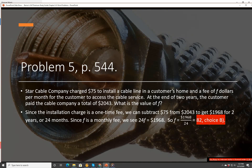Problem 5. This is a coaxial cable. Star Cable Company charged $75 to install a cable line in the customer's home, and a fee of F dollars per month for the customer to access the cable service. At the end of two years, the customer paid the cable company a total of $2,043. What is the value of F? Since the installation charge is a one-time fee, we can subtract $75 from $2,043 to get $1,968 for two years, or 24 months. Since F is a monthly fee, we see that 24F equals 1968. So F equals 1968 over 24, which is 82, choice B.